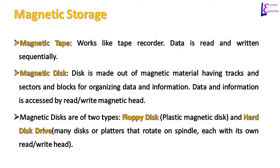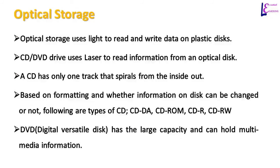A magnetic disk has been evolving with the evolution of computers. A magnetic disk is made out of magnetic material and has tracks, sectors, and blocks for organizing and storing data. Data on a magnetic disk is accessed by a read or write magnetic head which hovers over the disk. Floppy disk and hard drive disk are two popular magnetic disk-based storage devices. A floppy is a plastic-encased magnetic disk, whereas a hard drive contains many disks or platters that rotate on a spindle, each with its own read or write head.